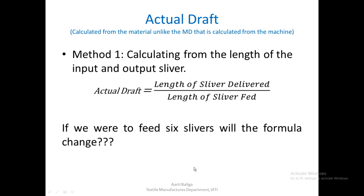A small but important point: suppose instead of one sliver I feed two slivers, each of say one inch length, through the drafting system. The output length would still be two inches if the draft is 2 — each sliver is drafted simultaneously. Whether I feed one sliver, two slivers, or ten slivers, the output length per sliver remains the same. So I do not have to consider the number of doublings in this length-based formula for actual draft.